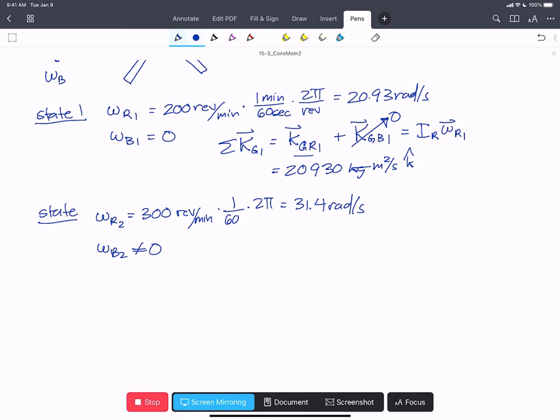So we can say that sum of the angular momentum at state two for the system equals the angular momentum at state two of the rotor about g, plus the angular momentum at state two of the body about g. So that's going to be IR omega r2 plus IB omega b2.